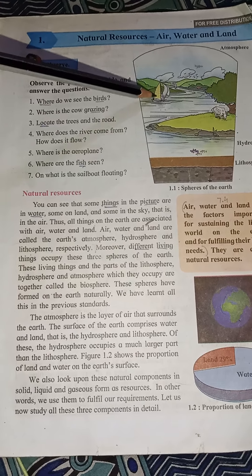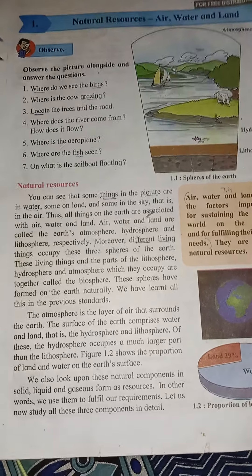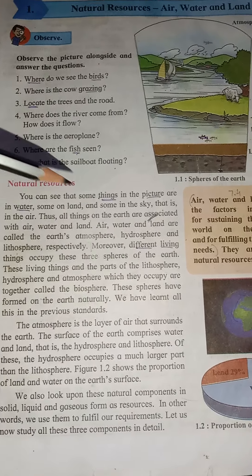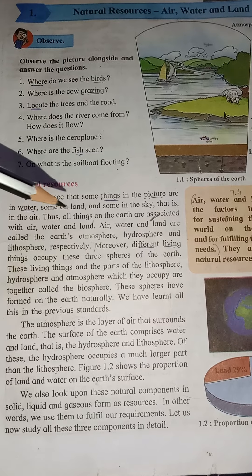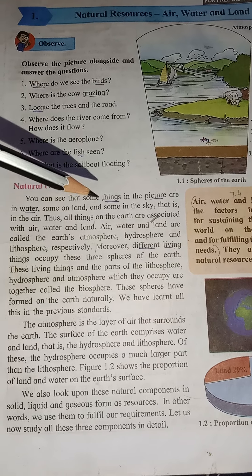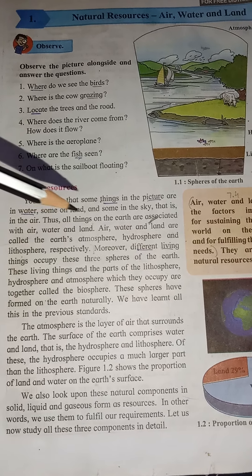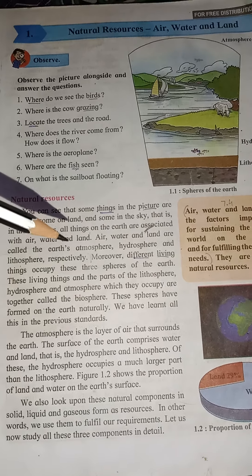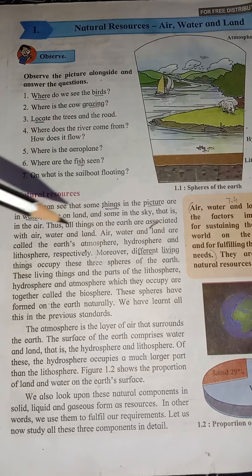Now, natural resources. We can see things in the pictures — some in water, some on the land, and some in the sky, that is in the air. Thus all things on the earth are associated with air, water, and the land. Air, water, and land are called the earth's atmosphere.